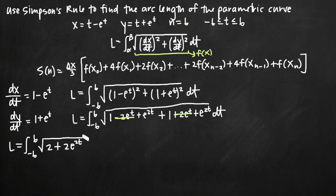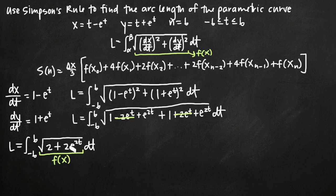That's about as simplified as we can get, so we'll call this value f of x — that is, the square root of 2 plus 2e to the 2t — which is what we'll plug into when we get to the Simpson's rule approximation. So now we can move to Simpson's rule.